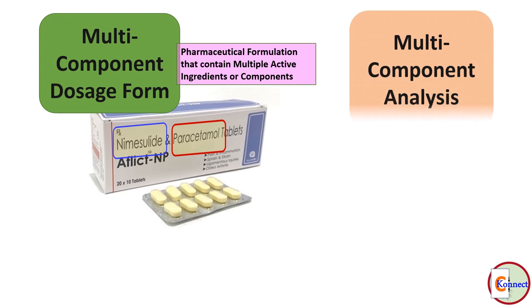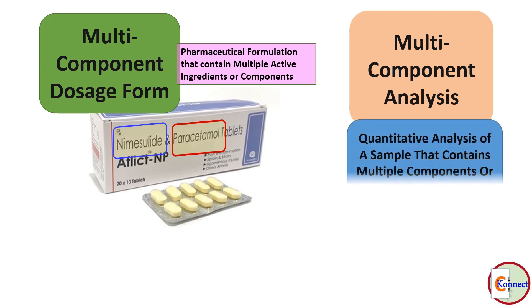Secondly, multi-component analysis, also known as multivariate analysis or multi-component spectroscopy, refers to the quantitative analysis of a sample that contains multiple components or substances. In multi-component analysis, the goal is to determine the quantity of API in a multi-component dosage form.